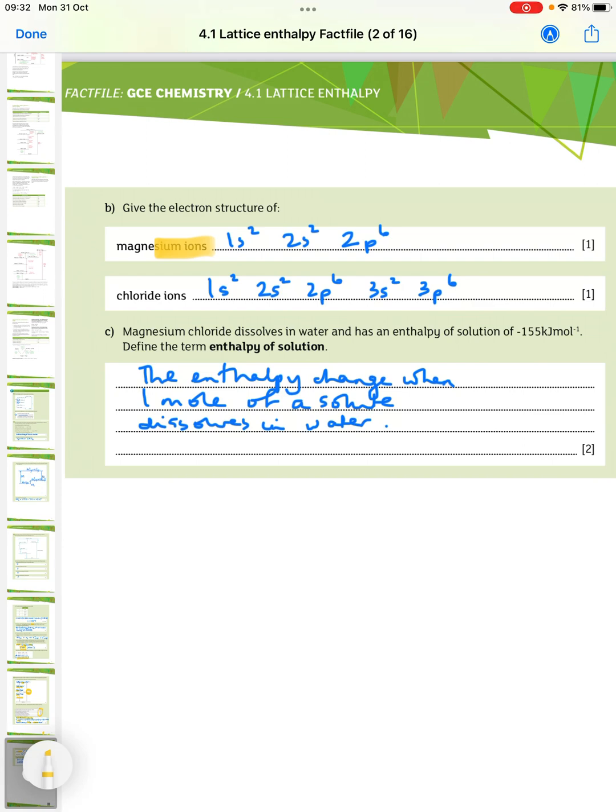Then, magnesium chloride dissolves in water and has an enthalpy of minus 155. Define the term enthalpy of solution. So, we're just looking for here the enthalpy change when one mole of a solute dissolves in water. That's it. Thank you.